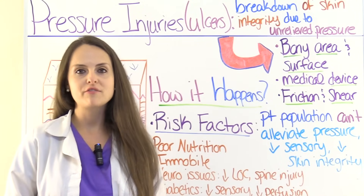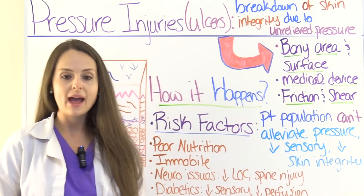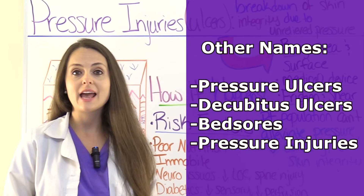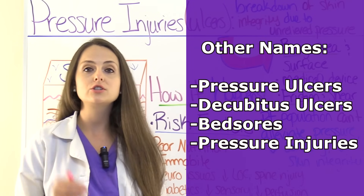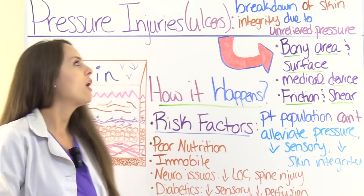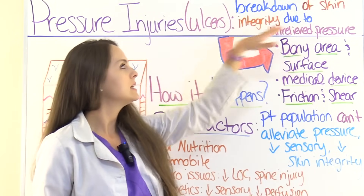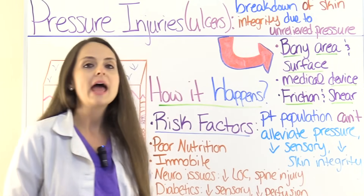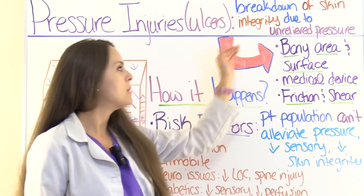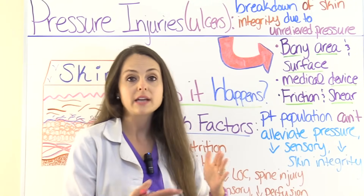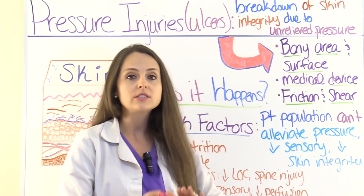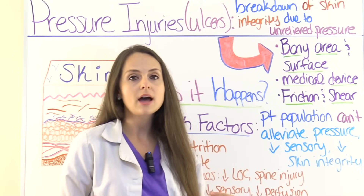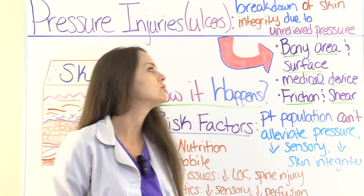Pressure injuries have had various names over the last several years. In the past, we have called them pressure ulcers, decubitus ulcers, or bed sores. Right now, they're most commonly termed pressure injuries. They are the breakdown of skin integrity due to some type of unrelieved pressure, which can come from a bony area on the body coming into contact with an external surface. We'll go over all those common bony sites that can lead to a pressure injury.